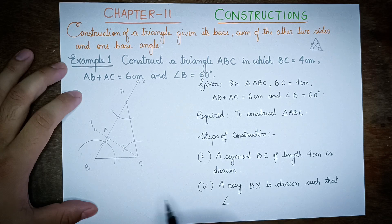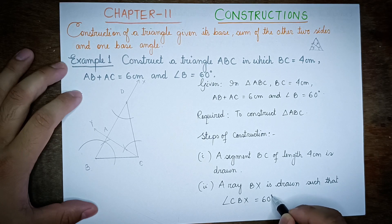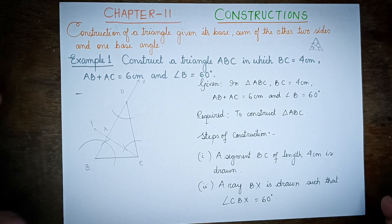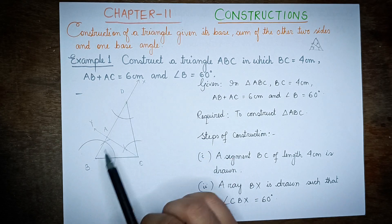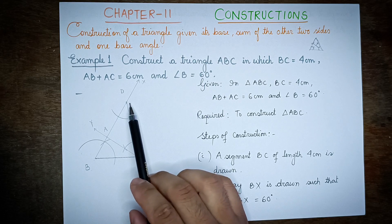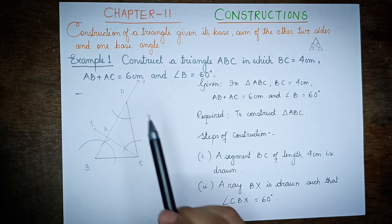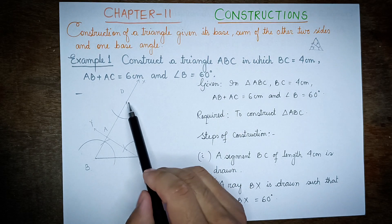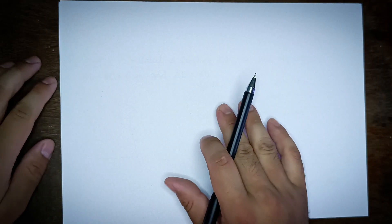Step 2: Angle CBX is drawn at 60 degrees. So Bx is drawn making an angle of 60 degrees with BC. The next step is step number 3.